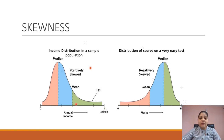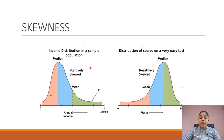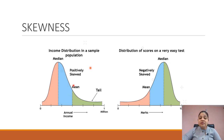For an example of positively skewed distribution, consider the salary distribution in a company. There will be very few people with very low salary in the orange region, and very few with very high salary — like the CEO or MD — in the green region. Most salaries are distributed in the blue region, but this is not the center of the data. The mean is shifted, and most data lies to the left of the mean, so the median is less than the mean. This is called a positively skewed distribution.